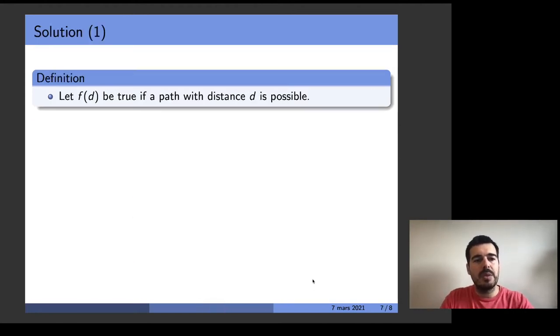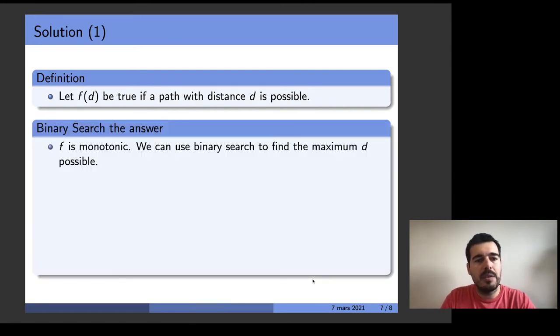There are multiple solutions for this problem. One of them is defining a function f of t to be true if a path with distance t is possible. We can observe that f is monotonic. This means that if distance t is possible, any distance lower than d is also possible.